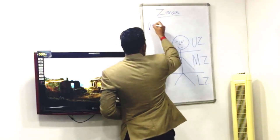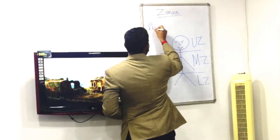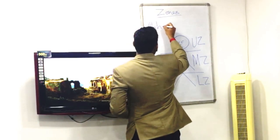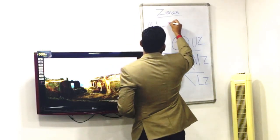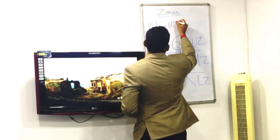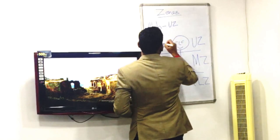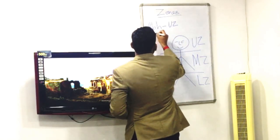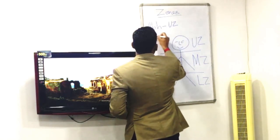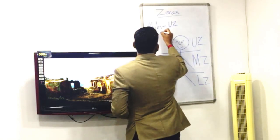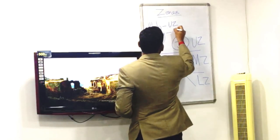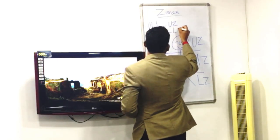L, B, and H are upper zone letters. G, J, and Y are lower zone letters.